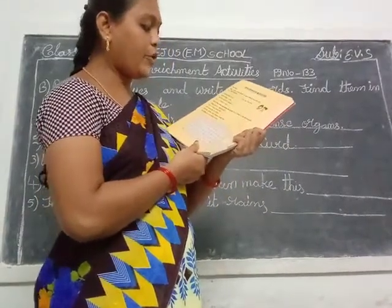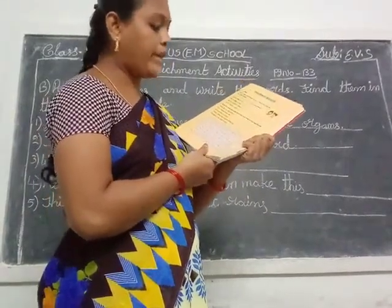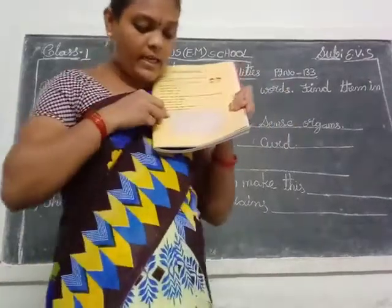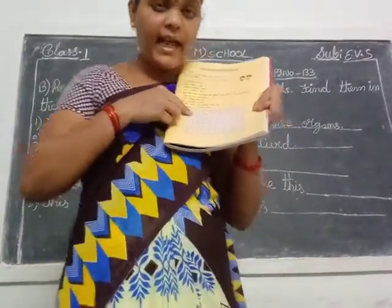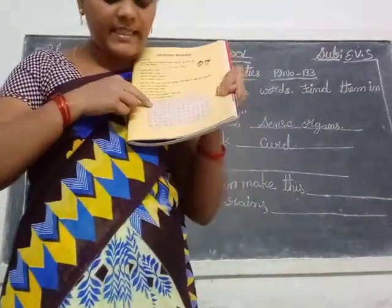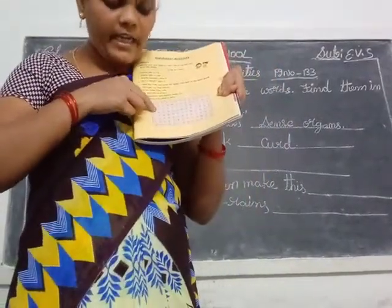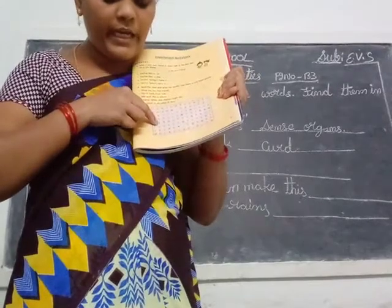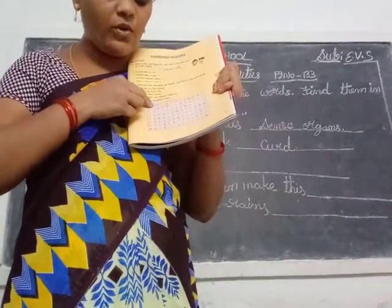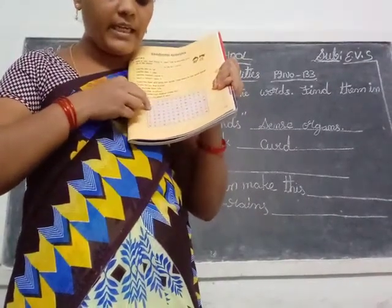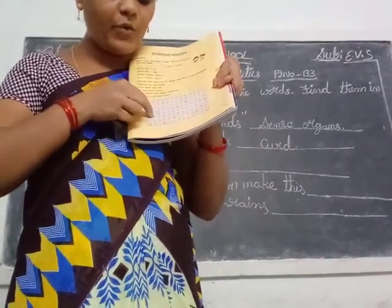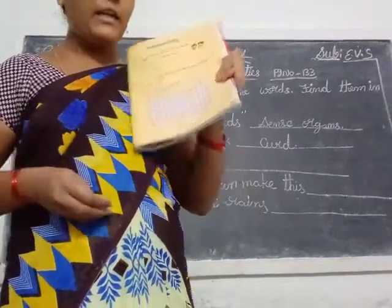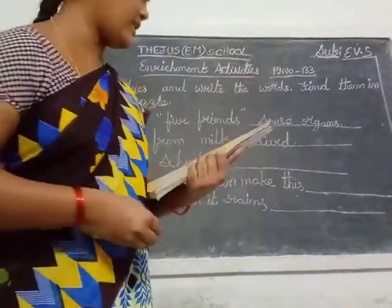C-U-R-D. Curd. See children, in the second line C is there, and going down: C-U-R-D. So you circle those letters — C-U-R-D. Curd. Okay children, next.